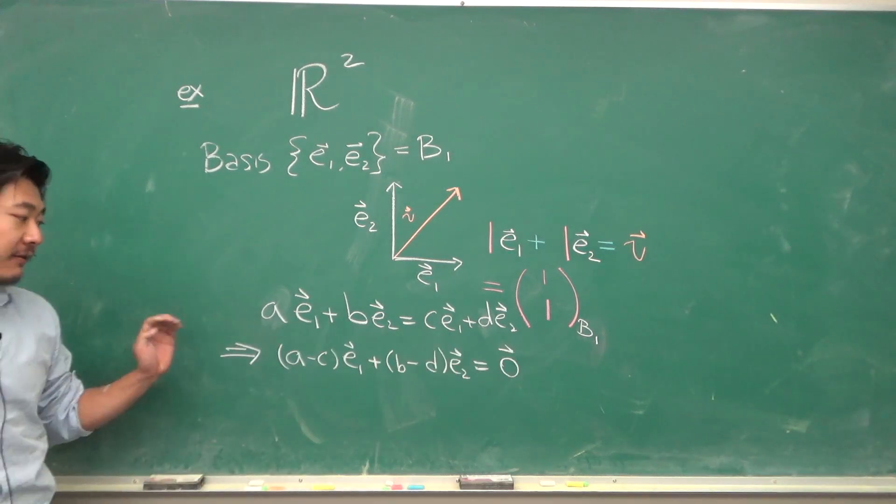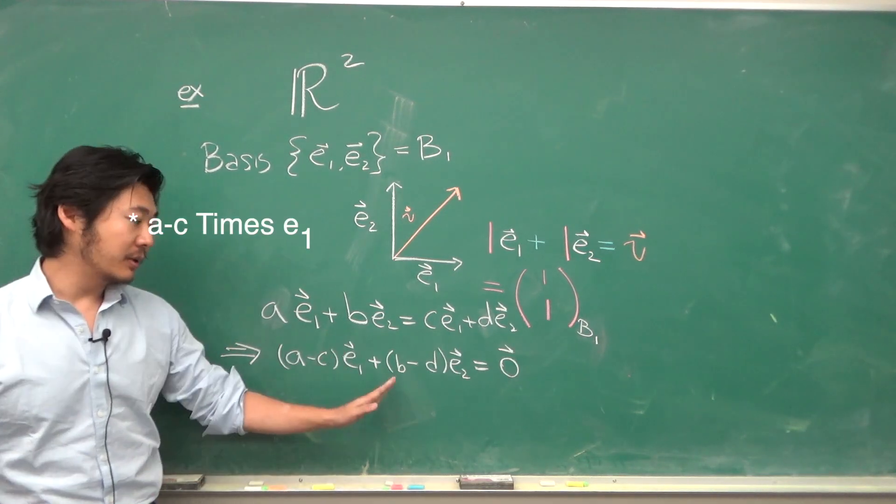Suppose there were two ways to describe the same vector. Let's say a·e₁ + b·e₂ is the same vector as c·e₁ + d·e₂. If we subtract these over, then we have (a - c)e₁ + (b - d)e₂ = 0. But e₁ and e₂ are linearly independent, so the only solution to this homogeneous equation is if a - c is 0 and b - d is 0. And so we get that a equals c and b equals d.